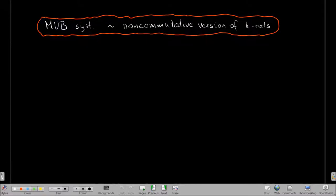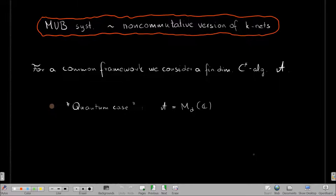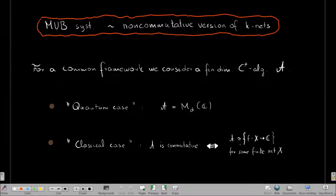By now you should perhaps suspect that MUB systems are some kind of non-commutative versions of classical k-nets. To put them in a common framework, I consider a finite-dimensional C*-algebra. When I choose this algebra to be the algebra of d-by-d matrices, I should recover mutually unbiased bases. When I choose this algebra to be commutative — essentially scalar functions over a finite set of points, which form a commutative algebra — I should recover classical k-nets.